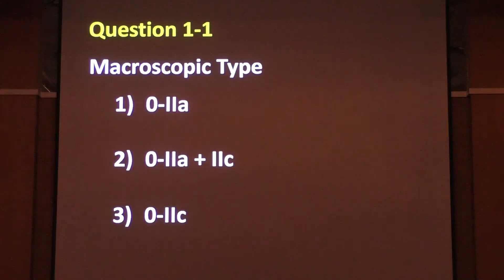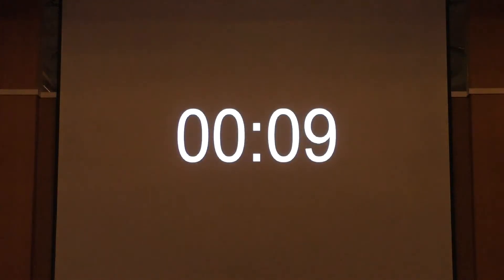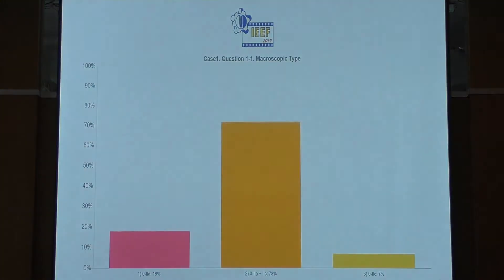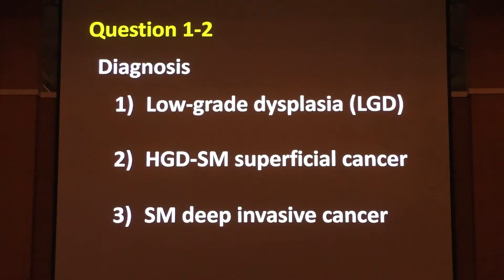I have three questions. The first question is: what is the macroscopic type? The second question is diagnosis — option 1 is low-grade dysplasia, option 2 is high-grade dysplasia or superficial SM-based cancer, and option 3 is deep SM-based cancer. Please choose your answer.